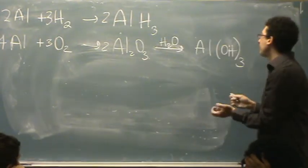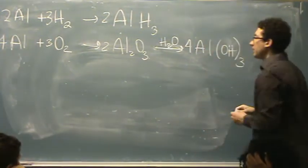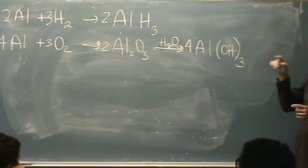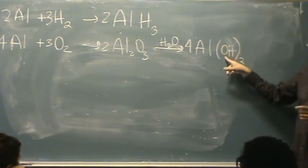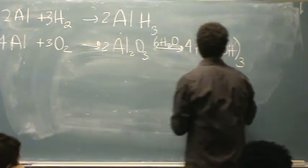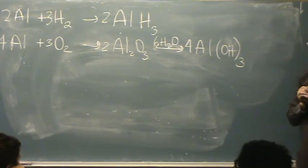For the second one, now I've got 4 aluminums, so 4 aluminums there. I've got, oh my goodness, 12 oxygens on the right, and I've got right now 6 here, so if I put 6 there, and that'll give me 12 hydrogens on each side. There we go, balance.